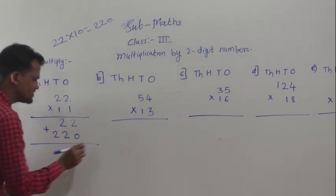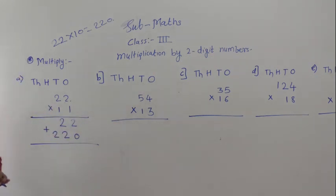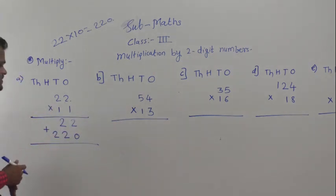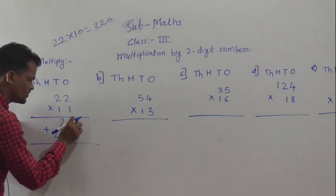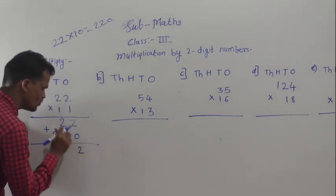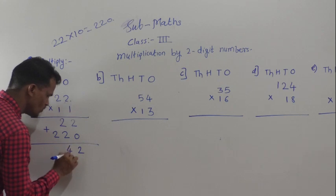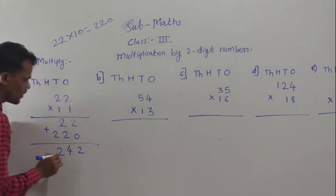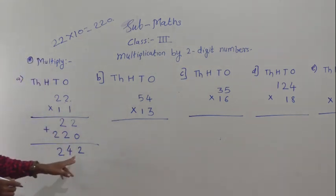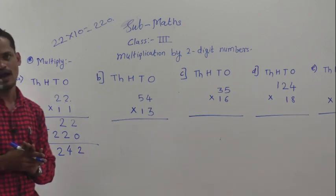Next step: add these 2 numbers and you will get the answer directly. 2 plus 0 is 2, 2 plus 2 is 4, and 2. It means 242 is the answer.